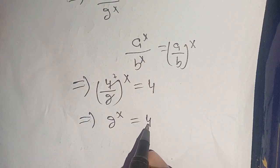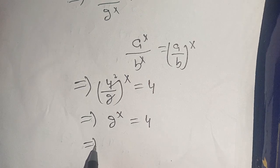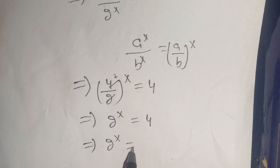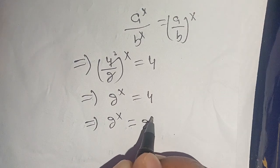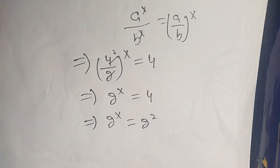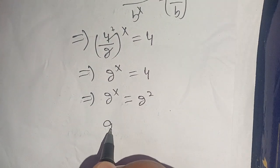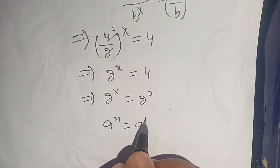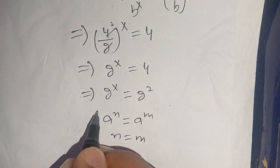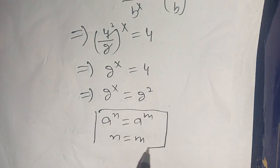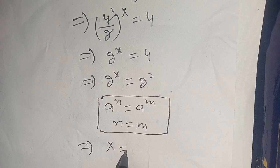Our right hand side is 4. We can write it in terms of 2: 4 can be written as 2 raised to power 2. So we have 2 raised to power x equal to 2 raised to power 2. This equation is in the form a^n = a^m, so we can compare the powers: n equals m. Using this identity, x is equal to 2.